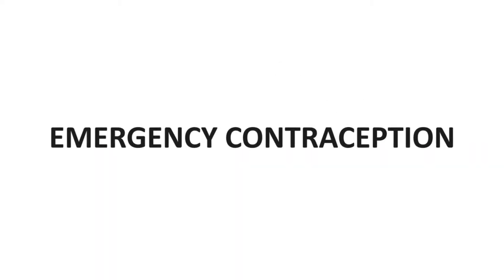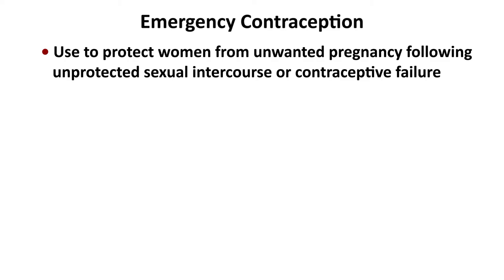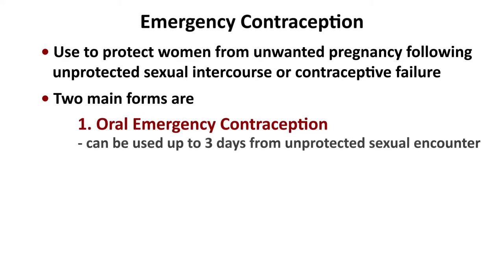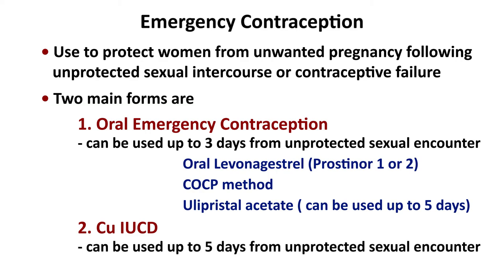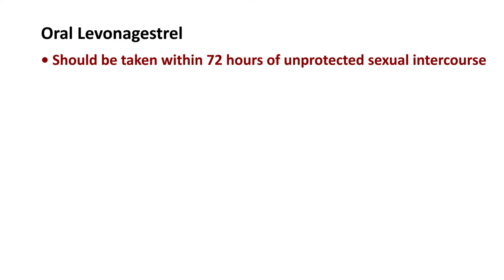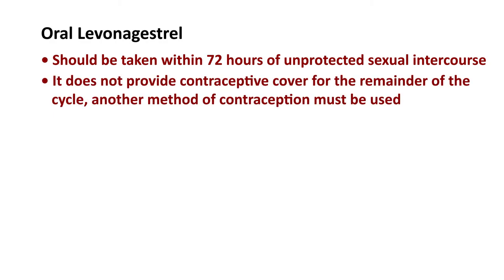Emergency contraception is used to protect women from unwanted pregnancy following unprotected sexual intercourse or contraceptive failure. Two main forms: oral emergency contraception, which can be used up to three days from the unprotected sexual encounter, and copper IUCD, which can be used up to five days. Oral emergency contraception includes oral levonorgestrel, the COCP method, and ulipristal acetate. Oral levonorgestrel should be taken within 72 hours of unprotected sexual intercourse; it does not provide contraceptive cover for the remainder of the cycle, so another method of contraception must be used.